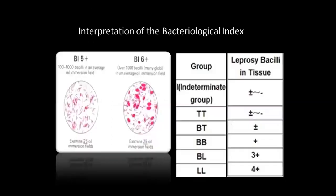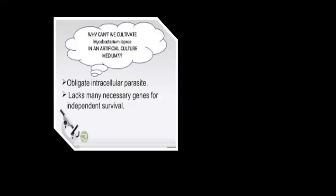Bacteriological or bacillary index interpretation: bacilli are not found in the indeterminate, borderline tuberculoid, or polar tuberculoid groups, but they become positive in borderline, borderline lepromatous, and polar lepromatous. As they increase, the bacillary index increases — it depends on how many bacilli are seen in an oil-immersion field in one glance.